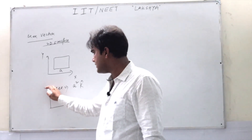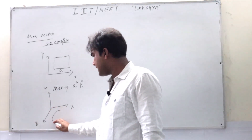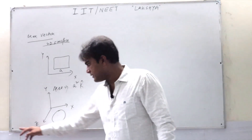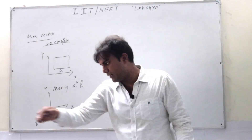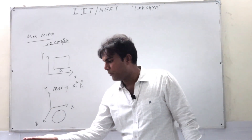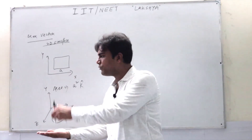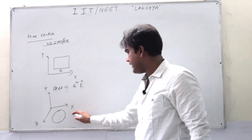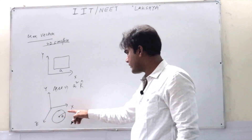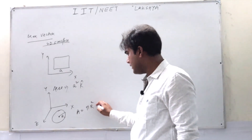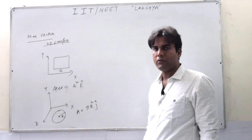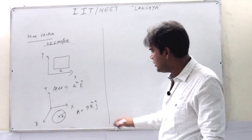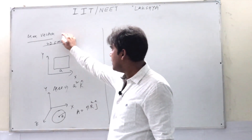One more example: let us say this is the x-axis, y-axis, z-axis — a circle is placed in the xz plane. So here the normal to this circle is upwards, meaning along the y-axis. So what will be the area? If the radius is r, the area will become πr²·j-cap. This is the area vector for this circle — πr²·j-cap.